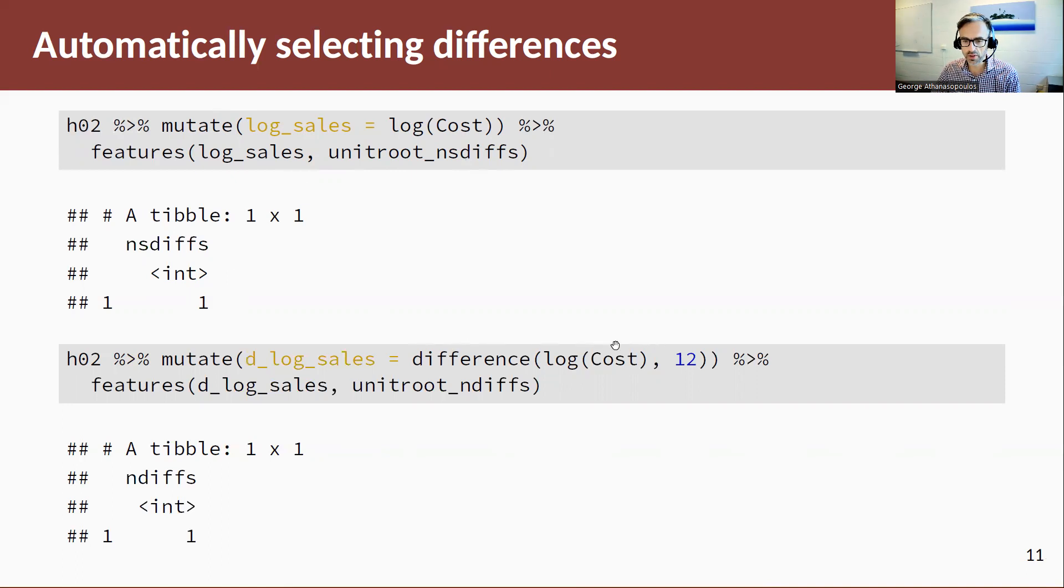Now, if we take the seasonal difference, then we want to see how many more differences we need to take and that tells us we need one more difference in that data to make the data stationary, which agrees with our eyeballing process.